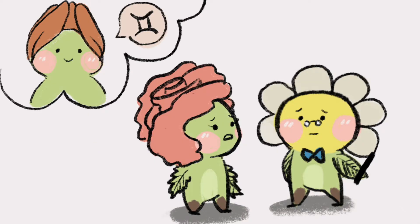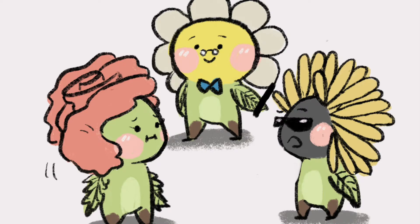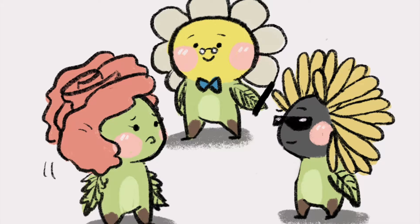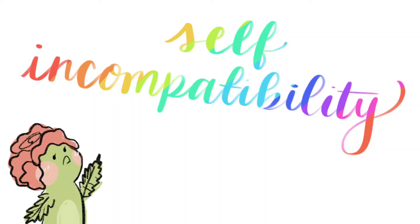Well, I was talking to this tulip and we really hit it off, but I found out that he's a Gemini, so it's just not gonna work out. What's wrong with being a Gemini? I'm also a Gemini, so don't you think dating another Gemini would be like dating yourself? You know, something like self-incompatibility?